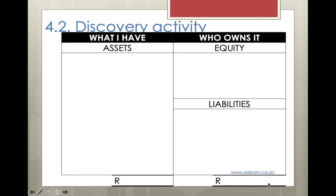4.2 the discovery activity. For this activity you'll need to cut out all the icons on your page — the money, the boerewors, the rolls, the serviettes, and all of those bits and pieces — because what we're going to do is illustrate how the transactions from our boerewors stand are going to affect the accounting equation.